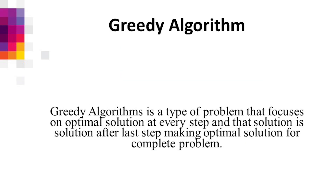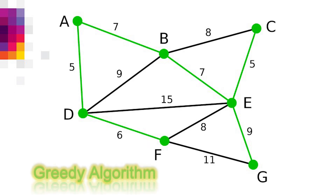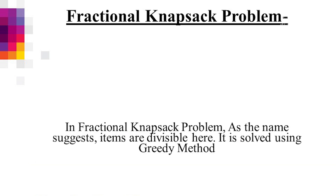A greedy algorithm focuses on the optimal solution at every step of the problem, and that solution after the last step makes the optimal solution for the complete problem. In the case of a weighted graph, finding the minimum spanning tree is an application of the greedy algorithm. Today we will be covering the fractional knapsack problem.